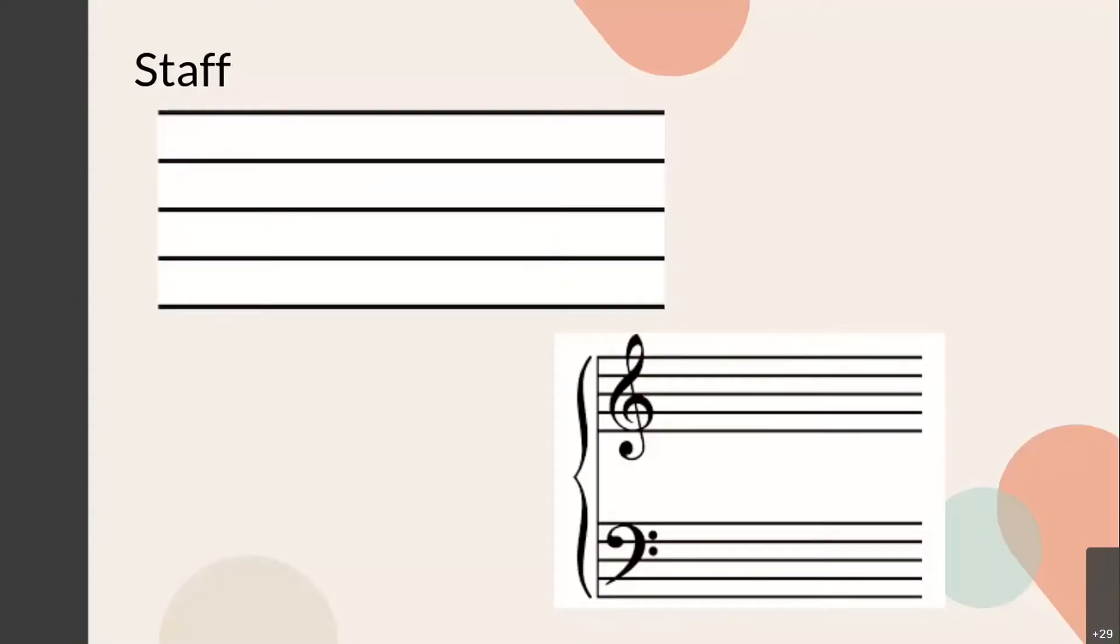So this right here is called the staff. The staff is a set of five lines and four spaces that holds the notes. So the note placement will tell you what a note is called. So you'll see this is a blank staff at the top right, and then on the bottom right, this is a set of staffs.